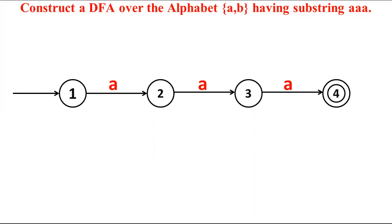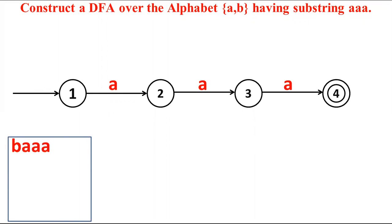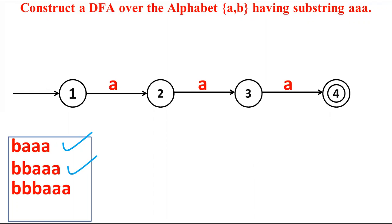Now consider the example 'baaa' — whether it should be accepted or not. Yes, it can be accepted since 'aaa' is a substring of the whole string 'baaa'. Consider another example 'bbaaa' — it can also be accepted, since we have 'aaa' as a substring. Similarly, 'bbbaaa' can also be accepted since the substring 'aaa' exists.